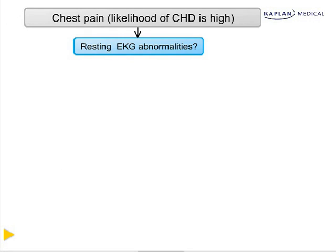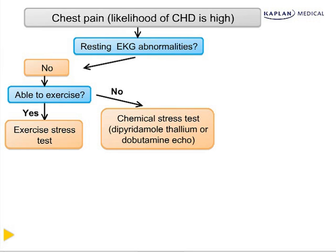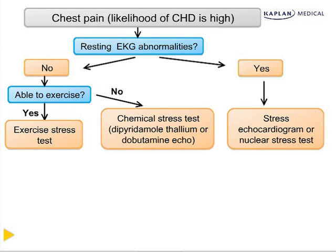In summary, evaluating a patient for possible coronary heart disease: if the resting EKG has no abnormalities and the patient can exercise, we do an exercise tolerance test looking for ST segment depression. If the patient can't exercise, we chemically simulate exercise using either dipyridamole and thallium or dobutamine and echo. If there are resting EKG abnormalities that make it unreadable for ischemia, we must do a stress echo or nuclear stress test to assess for ischemia.